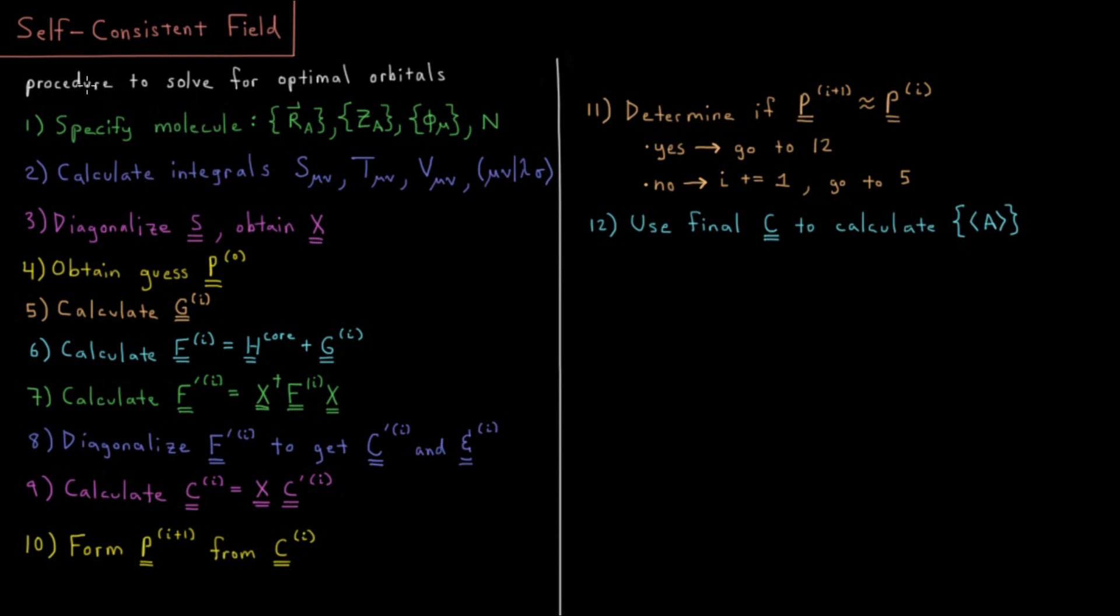So to remind ourselves once more that we're basically using the variational principle to say, given a set of basis functions, what are the orbitals I can form with those basis functions which have the lowest possible Hartree-Fock determinant energy?